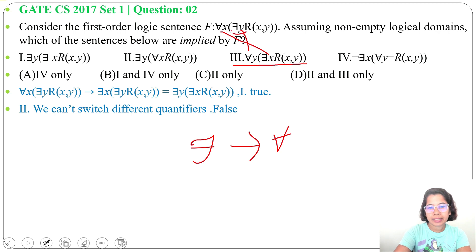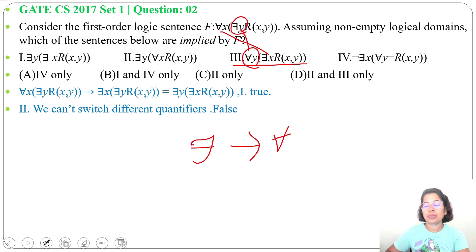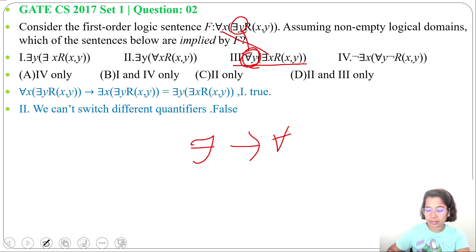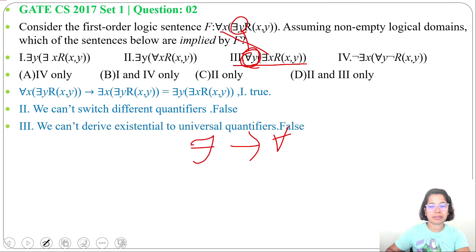If for some people it is true, it doesn't mean for all it is true. So from there exist Y, we cannot imply for all Y. We cannot derive a universal quantifier from an existential quantifier — we can only derive an existential from a universal. Here a universal is being implied from existential, so statement 3 is false.